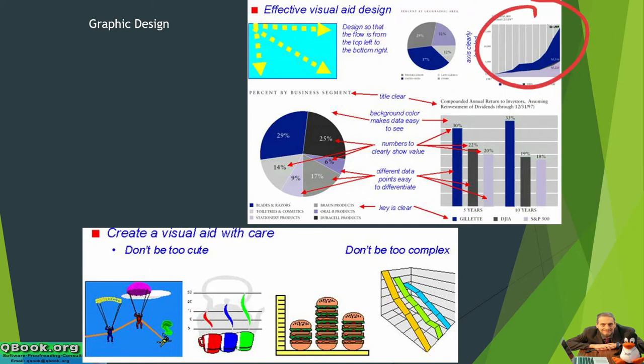Line charts are very nice, especially when you have solid lines — that is, the information is filled in with a solid color. That makes it a little bit easier to see rather than just one thin line, which is sometimes hard for the audience to see.